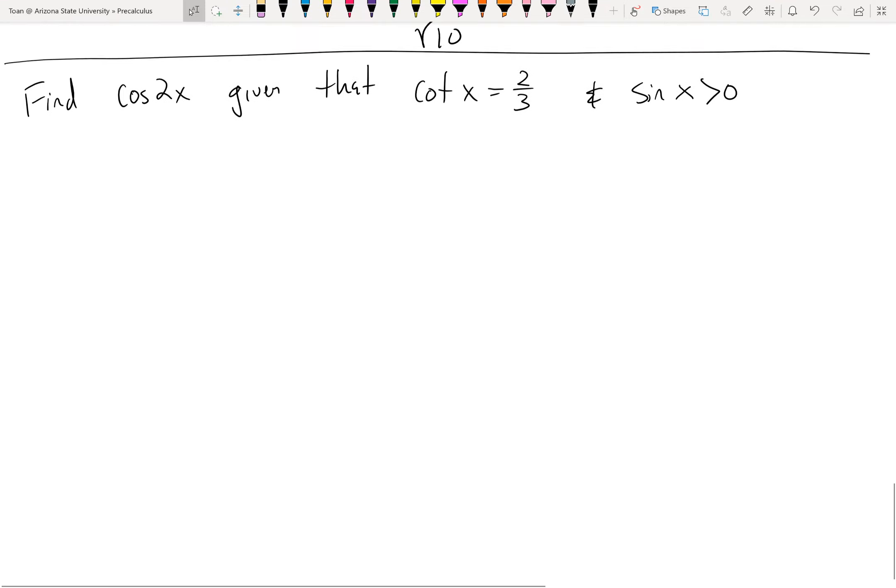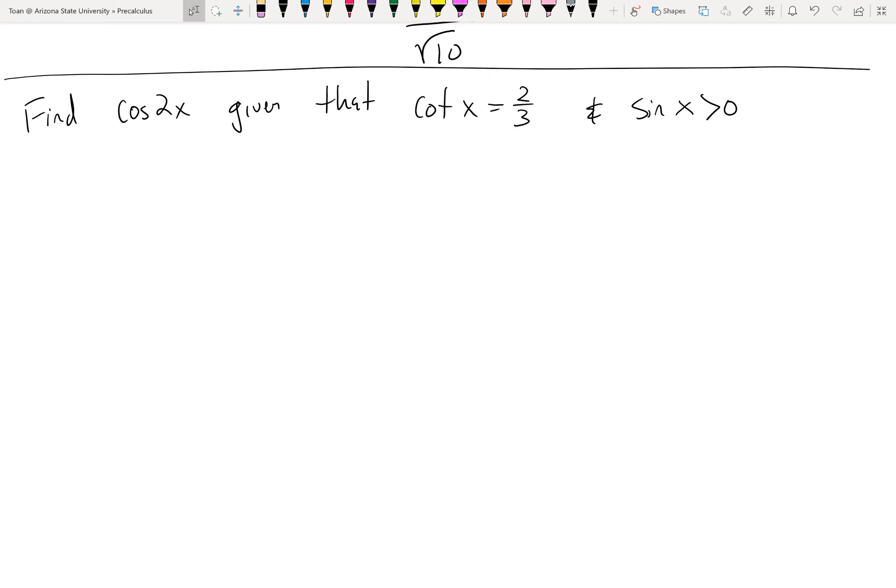So here we have to find cosine of 2x, which again seems like a very nebulous instruction, but they do give us more information. Recall that if we have an exact trig ratio, which they did give us, we can always draw a triangle. This extra piece of information seems random, but it will tell us what quadrant we're in.